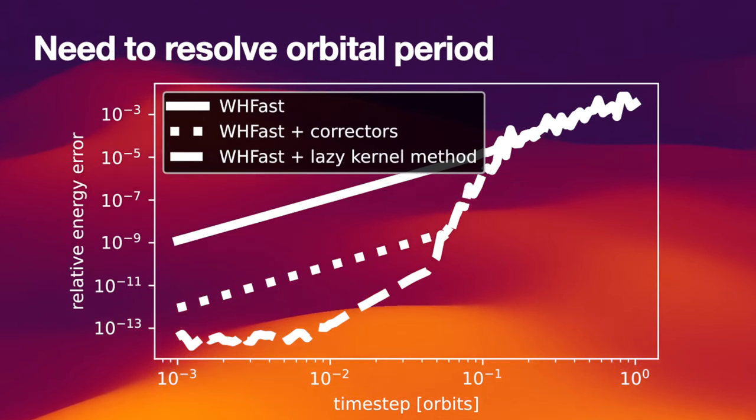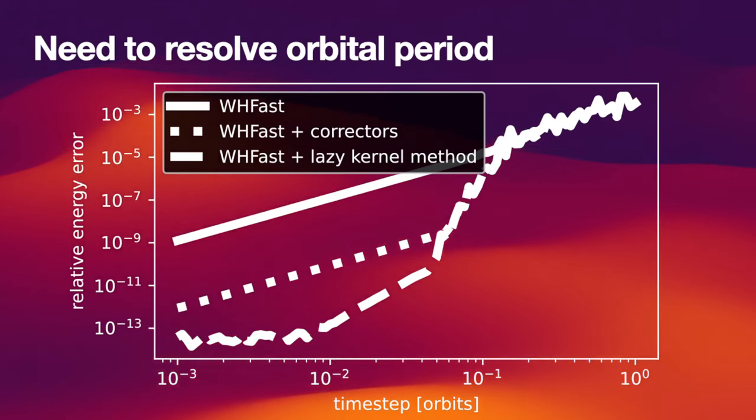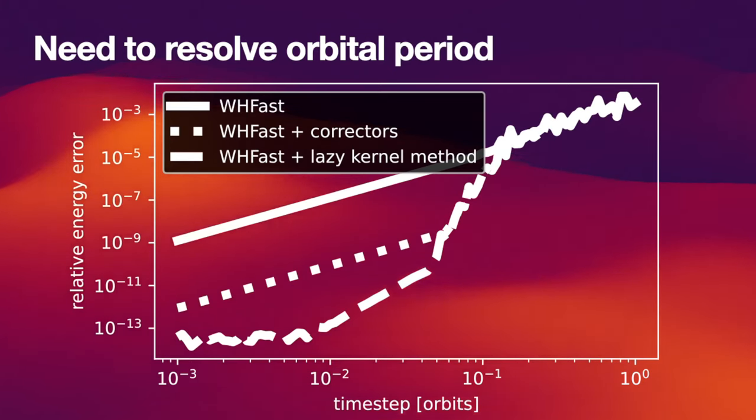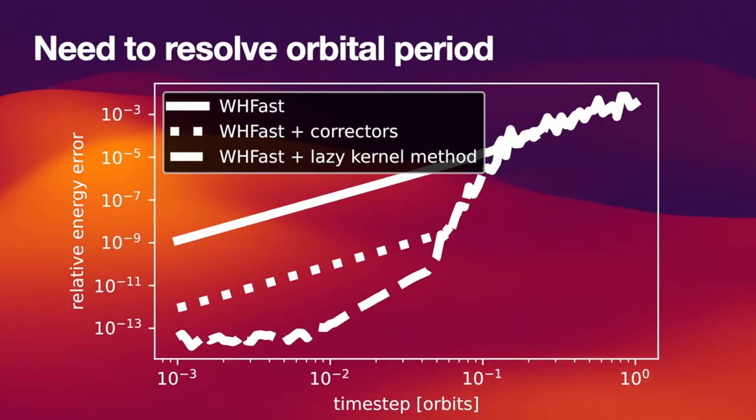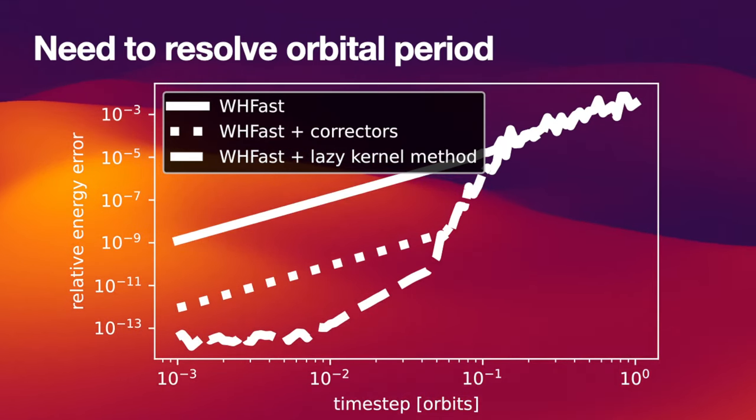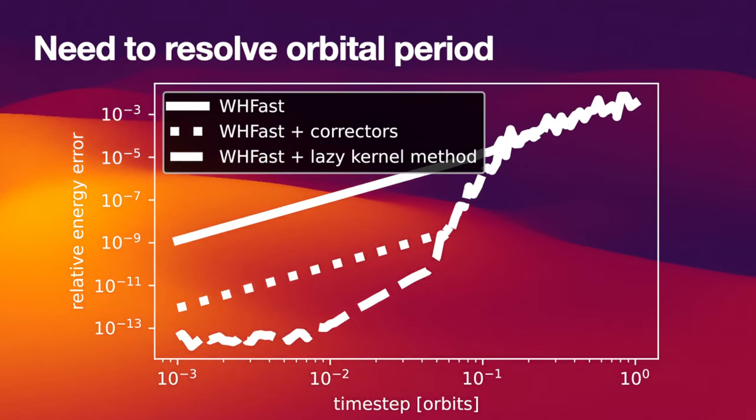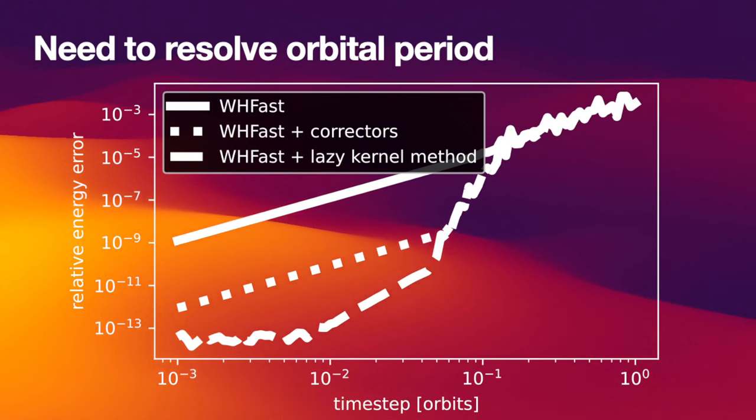And note that for a general planetary system, you don't only have one orbit period in there, you have multiple ones in there. So you are limited here by the shortest orbit period, the innermost one. So even though you might have now a very accurate method for the outer planets that have a larger orbit period, you're already limited by the machine precision in the first place. So there are really a lot of cases where Wisdom Holman is just good enough.